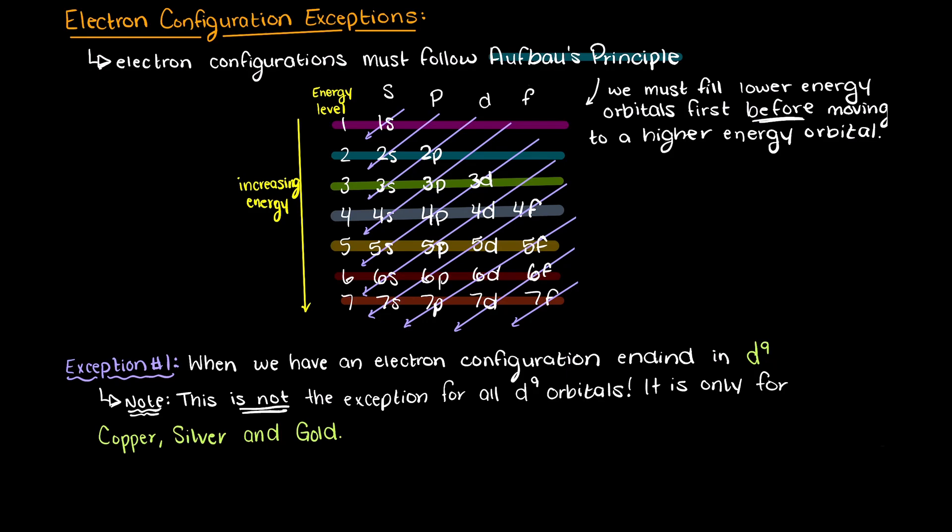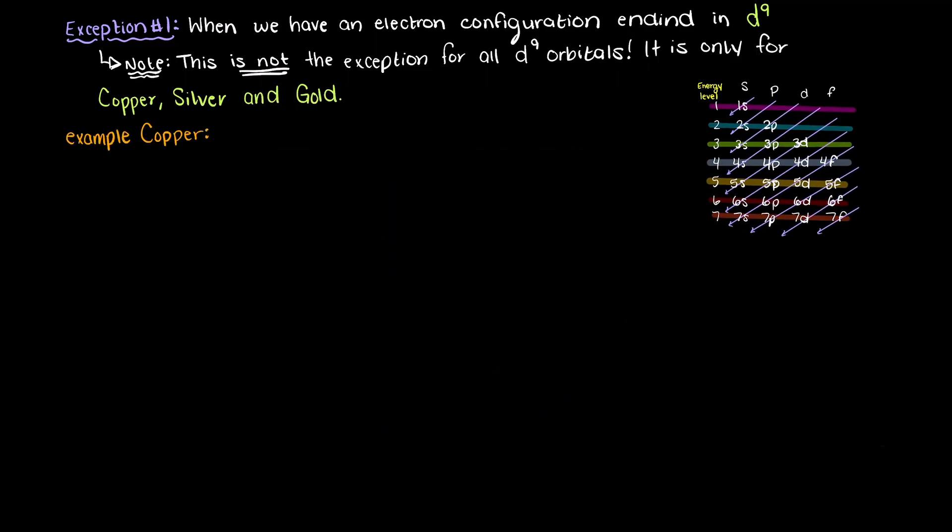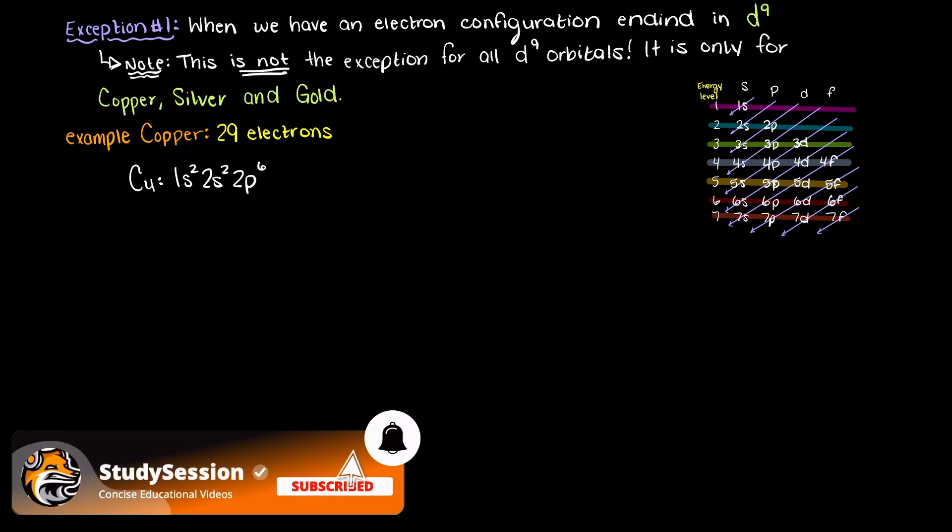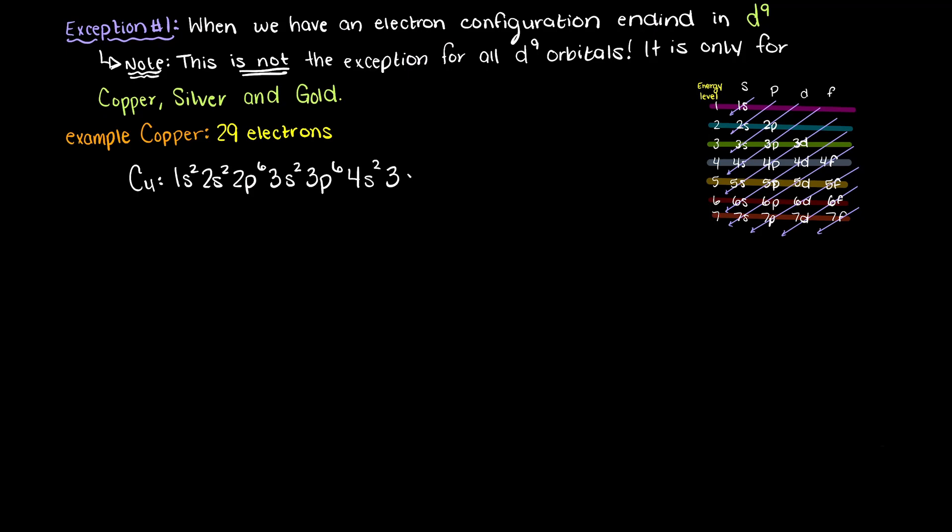As an example, let's use copper. Copper has 29 electrons, which we would suspect has an electron configuration of 1s2, 2s2, 2p6, 3s2, 3p6, 4s2, 3d9.